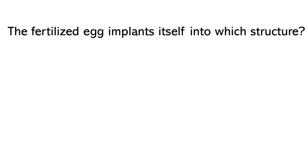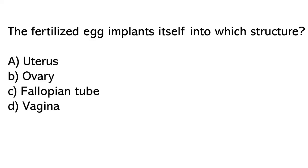The fertilized egg implants itself into which structure? Options: A) Uterus, B) Ovary, C) Fallopian tube, D) Vagina. So the correct answer is option A. Uterus.